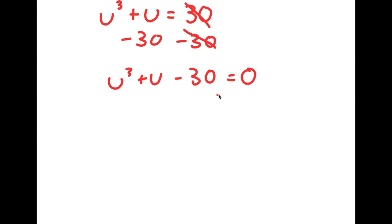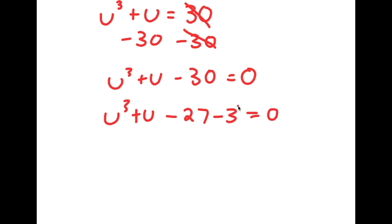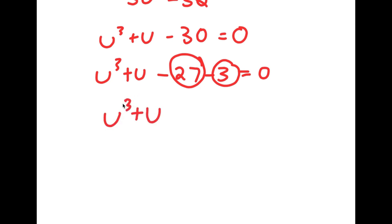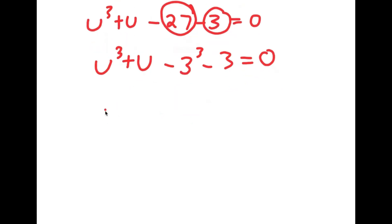We have an equation and we need to find what value of u makes it equal to 0. So I'm going to rewrite 30 as negative 27 minus 3. The reason I did this is because 27 is the same thing as 3 to the power of 3. Notice we have something in the form u to the power of 3 plus u — we can think of u as 3 in this case. So I put this in the form u to the power of 3 minus 3 to the power of 3 plus u minus 3 is equal to 0.